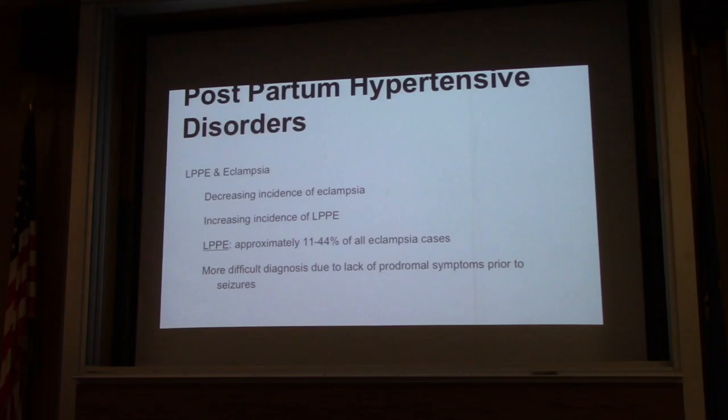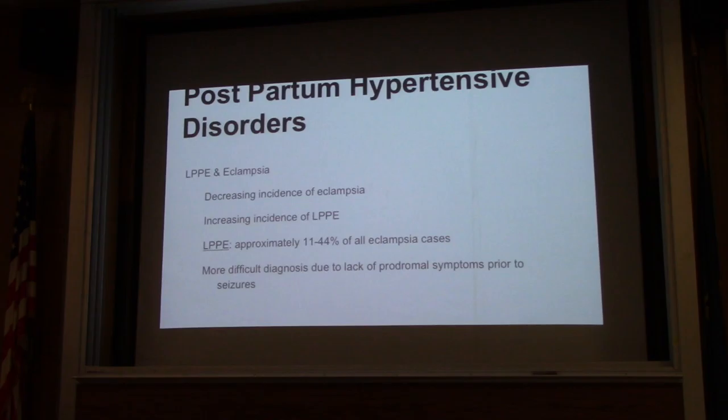The pathophysiology of preeclampsia and eclampsia is not really well known. There are a lot of different theories, but most people think it has to do with the placenta and generalized endothelial dysfunction. Late postpartum eclampsia is increasing in incidence, and it's also a more difficult diagnosis to make — a lot of times people won't present with the usual prodromal symptoms associated with eclampsia.